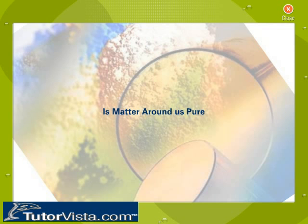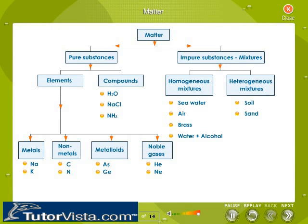Is matter around us pure? You can classify matter into pure and impure substances. Impure substances are often mixtures containing more than one substance. You can again classify pure substances into elements and compounds.